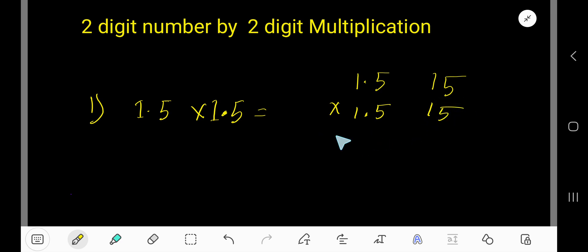Just multiply these two numbers first ignoring decimal. Start with this 5. 5 times 5, 25. Write 5 and carry 2 to the next column. Then 5 times 1, 5 plus 2, 7.